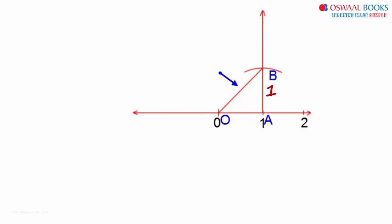This length OB is root 2 units. And that is the length we need on the number line. So we keep the compass on point O, take length OB and cut an arc like this. That gives us length OC as root 2 units.